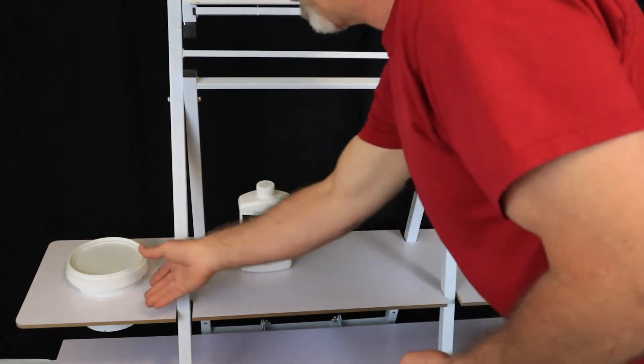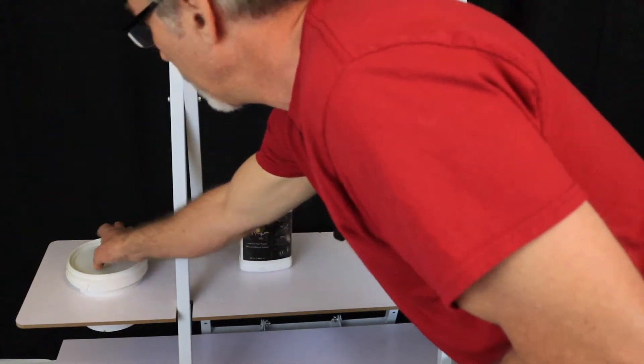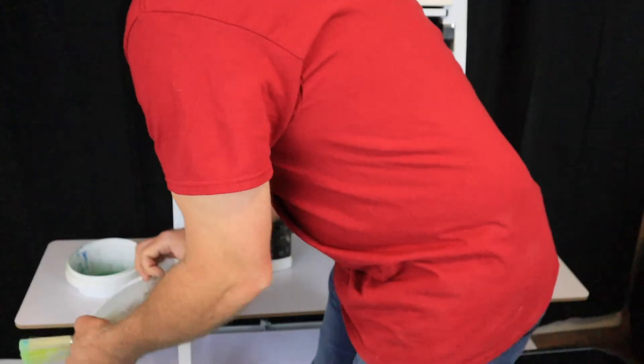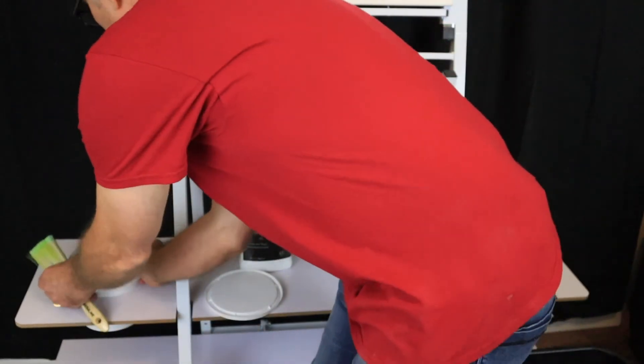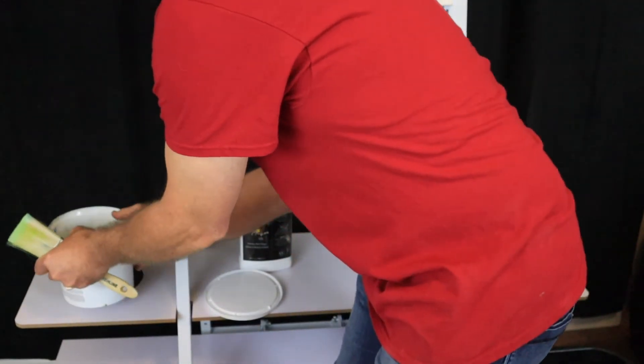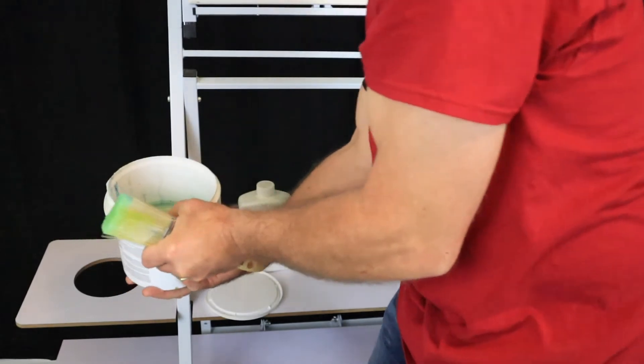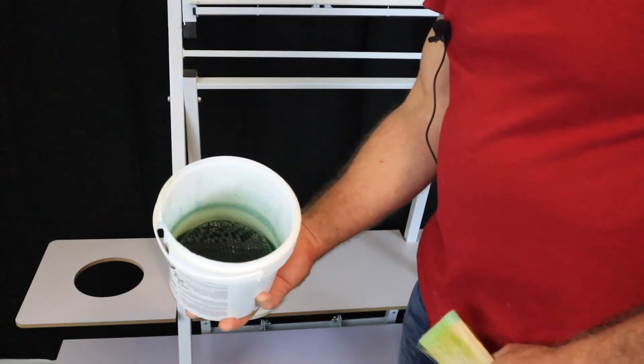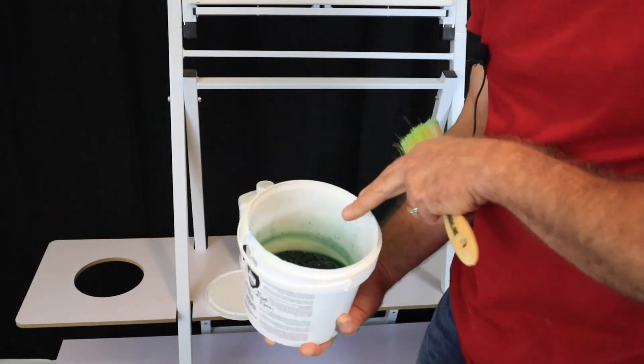This is what I have in my little bucket here. This is a Bob Ross thinner bucket. This is to clean your brushes and there's a little screen in the bottom.